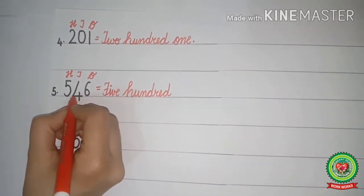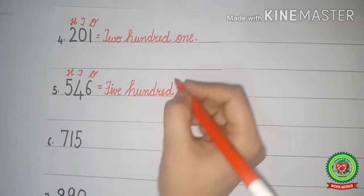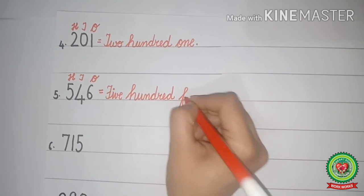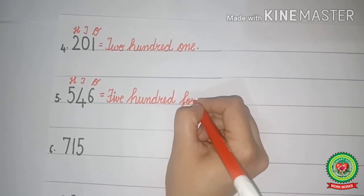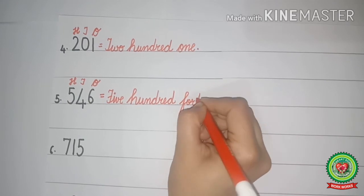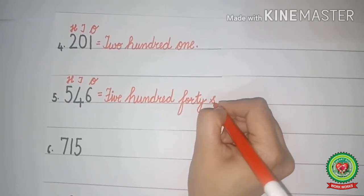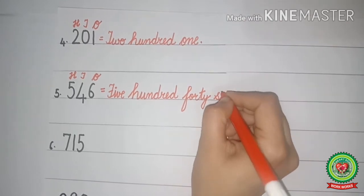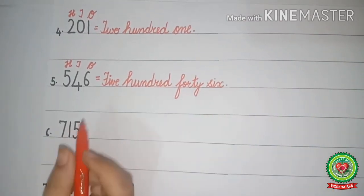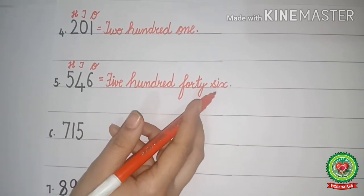They both are best friends so we will write them together. 4 and 6 make 46. First we will write the spellings of 40 - spell 40: F-O-R-T-Y. And 6 - spell 6: S-I-X. So 546 is five hundred and forty-six. Full stop.